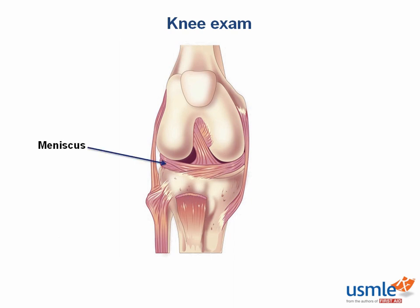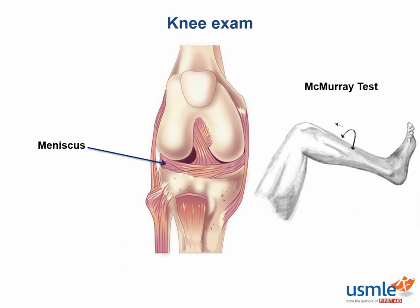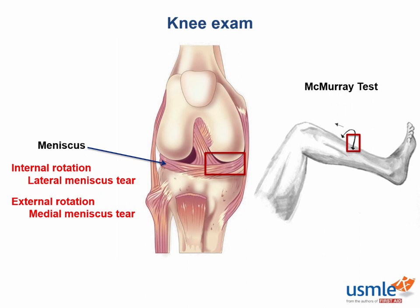Finally, let's talk about the meniscus, which is a piece of cartilage between the femur and the tibia. What is unusual about the medial meniscus? It's attached to the MCL, which makes it less mobile than the lateral meniscus. Always test the MCL and the medial meniscus together when you examine a patient. We test the meniscus with the McMurray test — rotate the tibia while flexing and extending the knee. Internal rotation, where the toes point to the midline, with pain and popping suggests a lateral meniscus tear. External rotation gives signs of a medial meniscus tear.